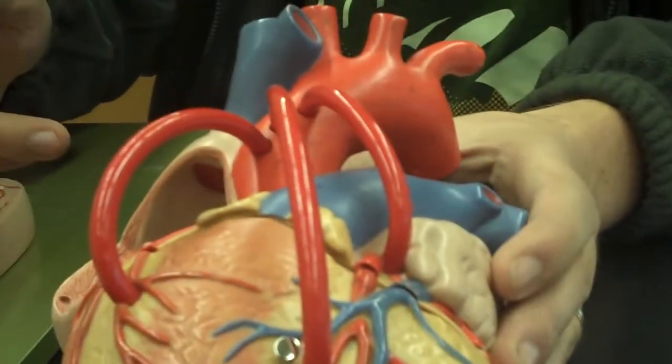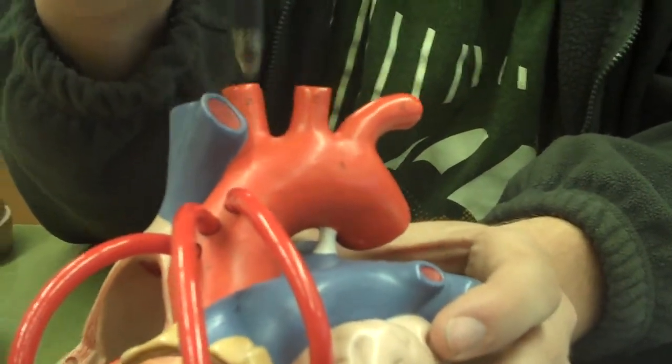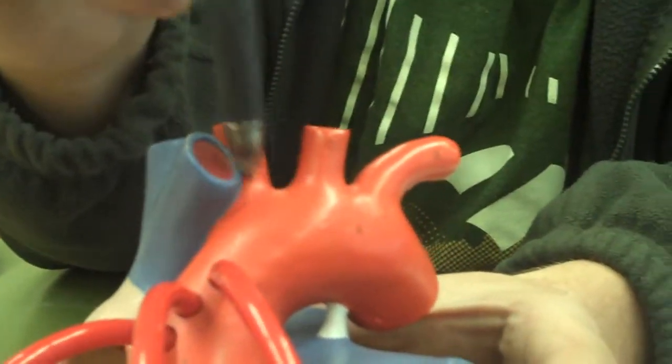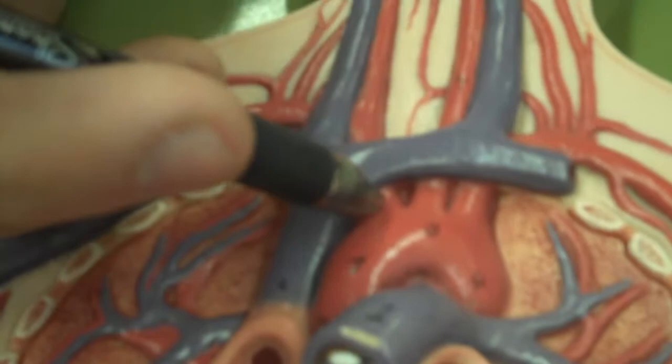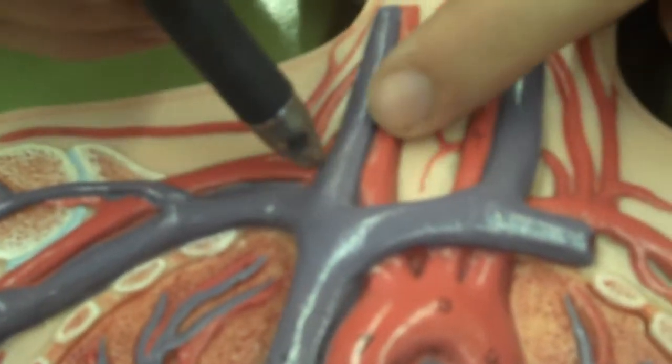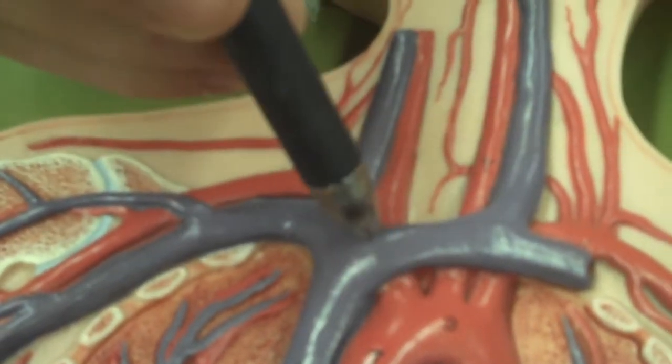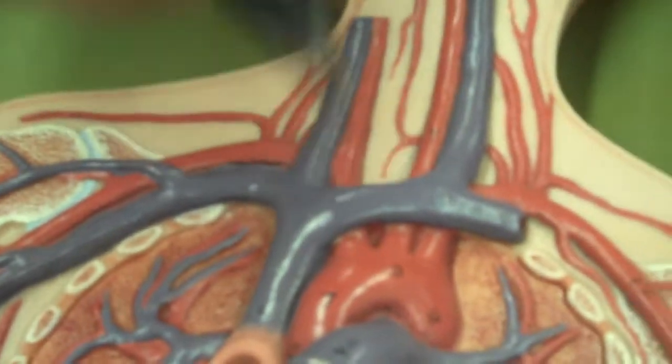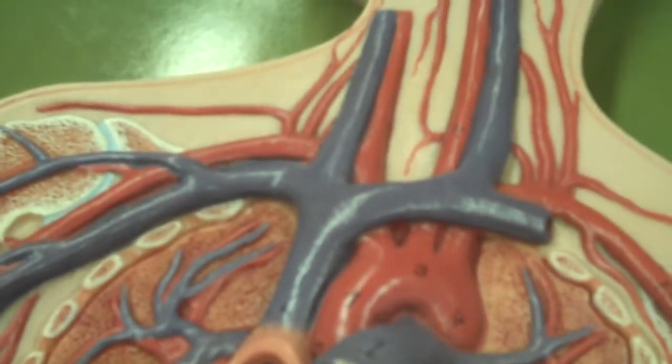Next is brachiocephalic trunk. The brachiocephalic trunk is this first branch coming off of the aorta. So if you look over here, the brachiocephalic trunk comes off right here. It's up to here, and then it splits. It's called brachiocephalic. Brachial refers to arm. Cephalic refers to head. So it means arm head artery. It's where the blood from the arm and the head are hanging out together.